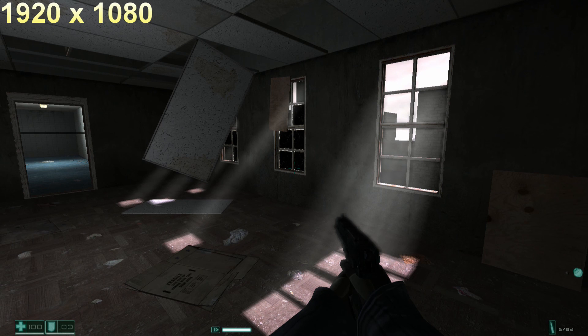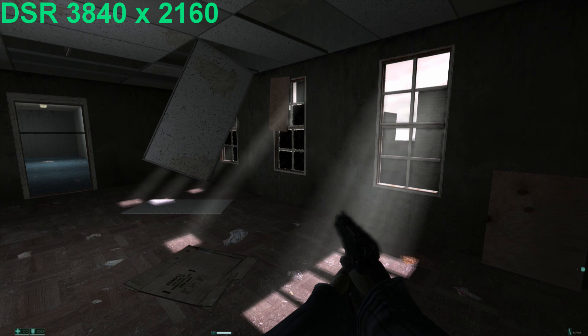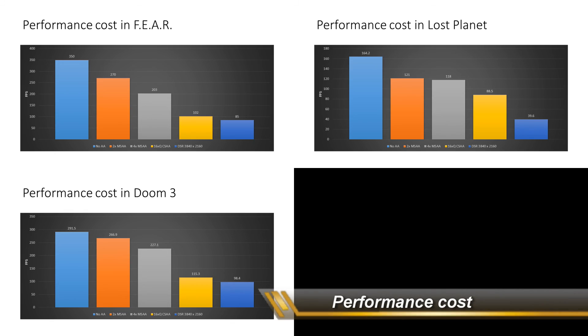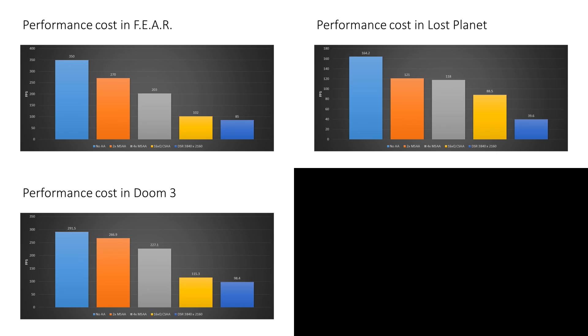Now another thing we have to talk about — one of the negatives is, and people that have a 4K monitor know all about this, that user interface elements can end up really tiny. And looking at some benchmark results, how much performance does it cost to enable Super Dynamic Resolution at 2160p? You can see that it's quite demanding — 2x and 4x MSAA are a lot faster, and even 16x anti-aliasing is still faster than SDR.